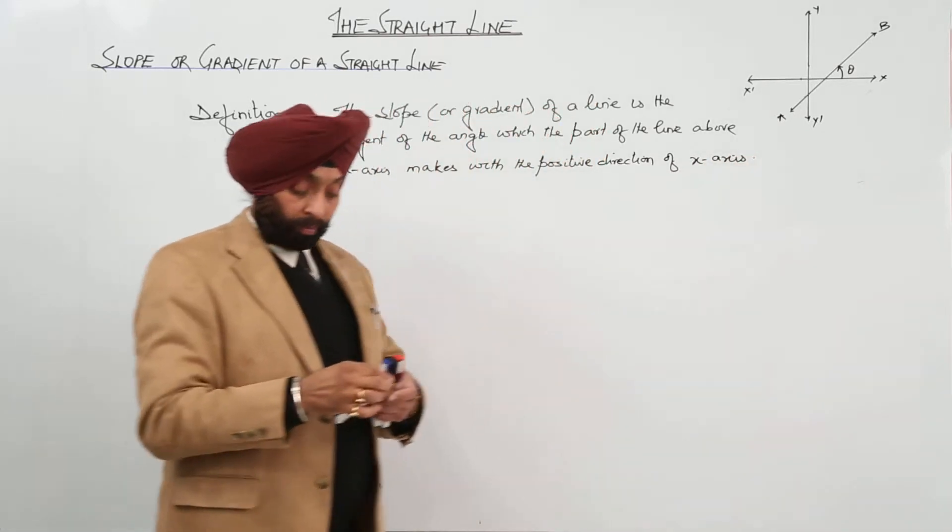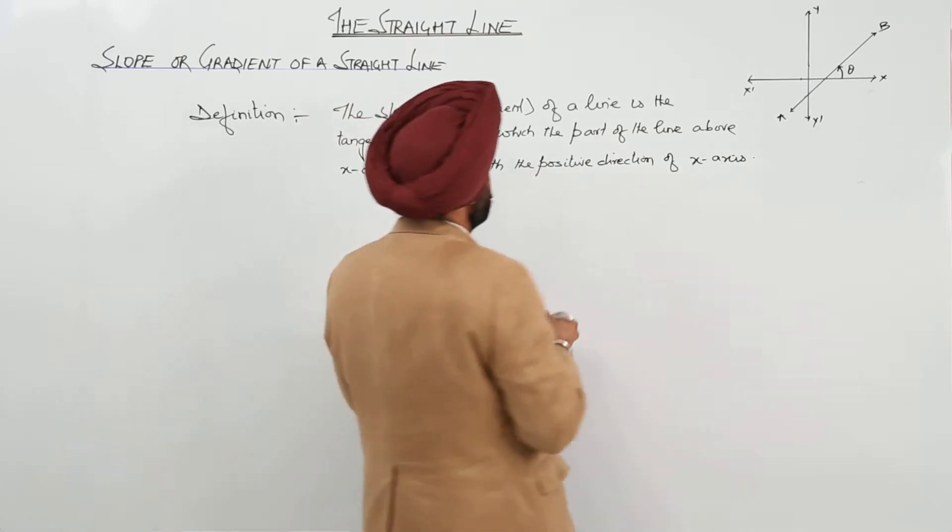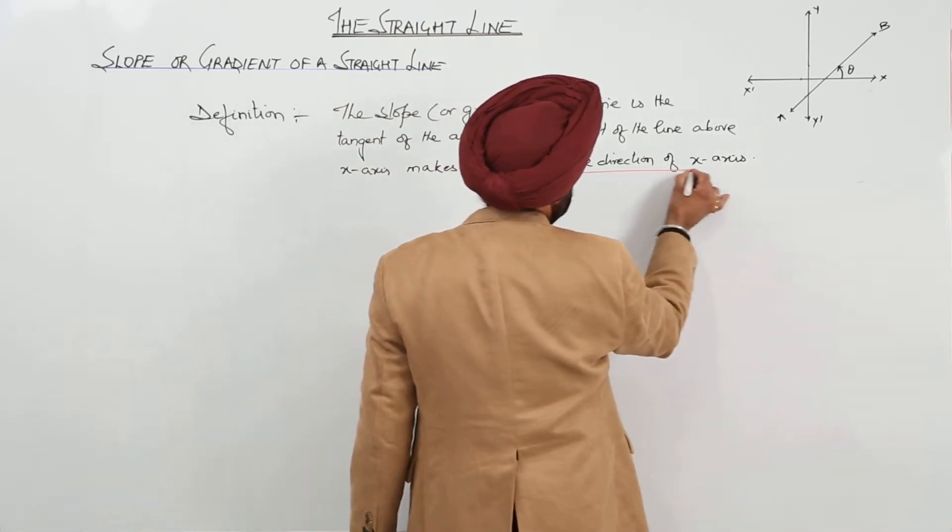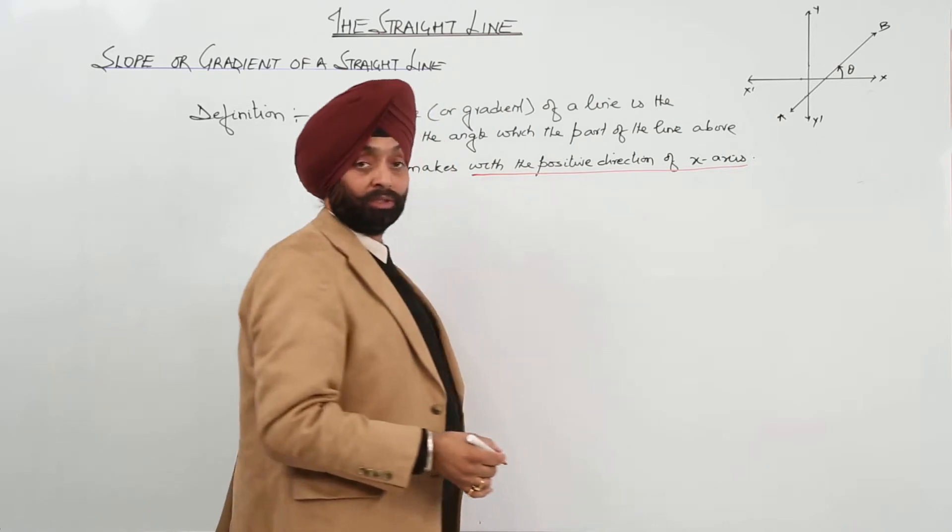Now, for finding the slope, the main content is this one: with the positive direction of x-axis. This is the main thing.